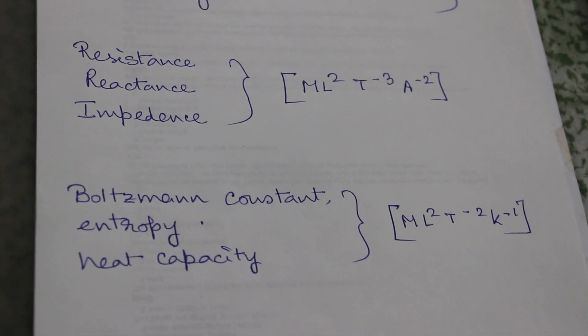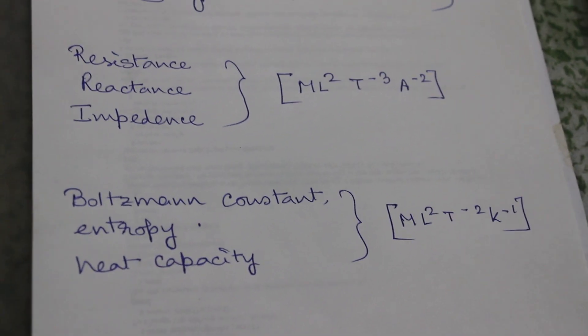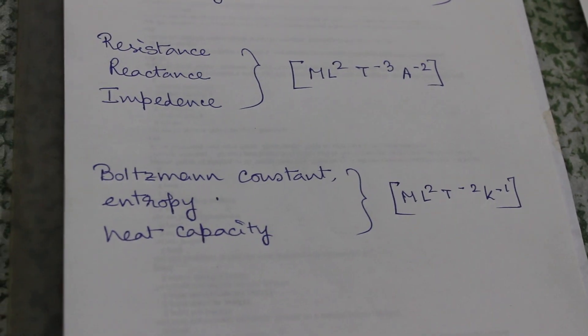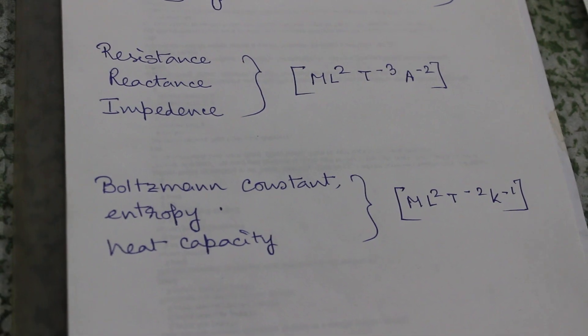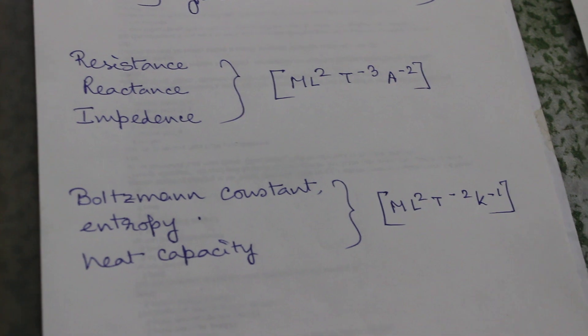Resistance, reactance (both inductive and capacitive), and impedance all lie in the same group. They have the same dimension: ML² T⁻³ A⁻², where A is current.